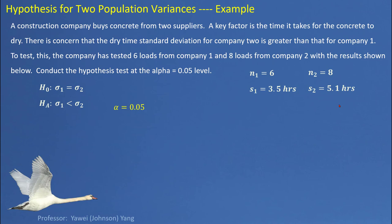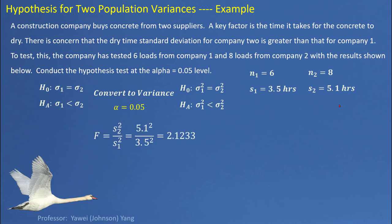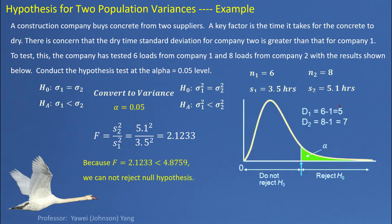Here's our hypothesis testing model. We test if the concrete from company two has a greater standard deviation than the concrete from company one, and we transform the model to the format described by variance. We calculate the F-test statistic value by doing the ratio of the two sample variances, getting 2.1233. The critical value based on the provided information is 4.8759. Since the F-test statistic value 2.1233 is smaller than 4.8759, we cannot reject our null hypothesis.